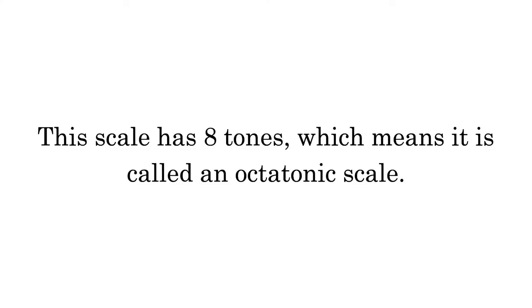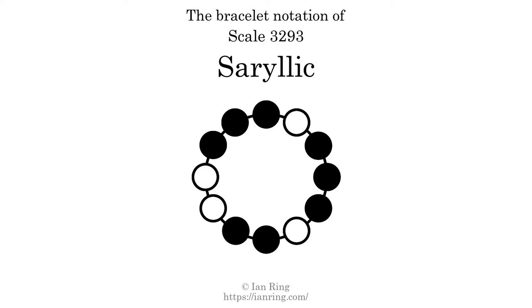This scale has 8 tones, which means it is called an octatonic scale. This is a bracelet notation diagram of scale 3293. The shaded circles represent tones that appear in the scale, and they are read clockwise, starting at the top.